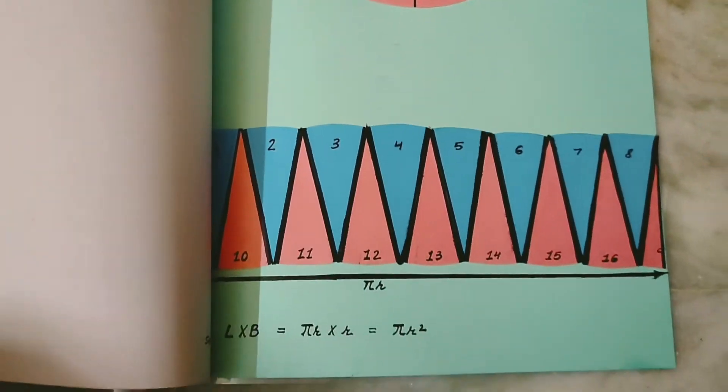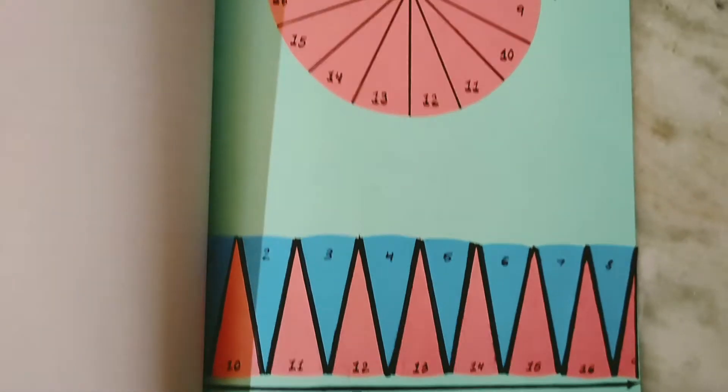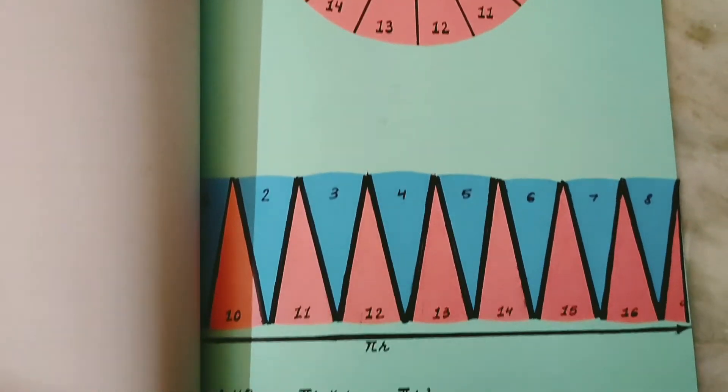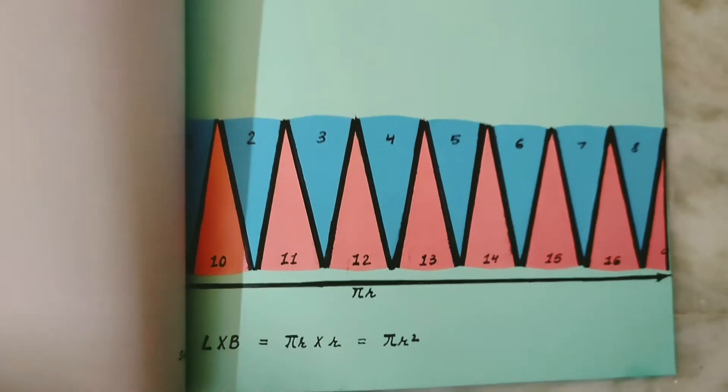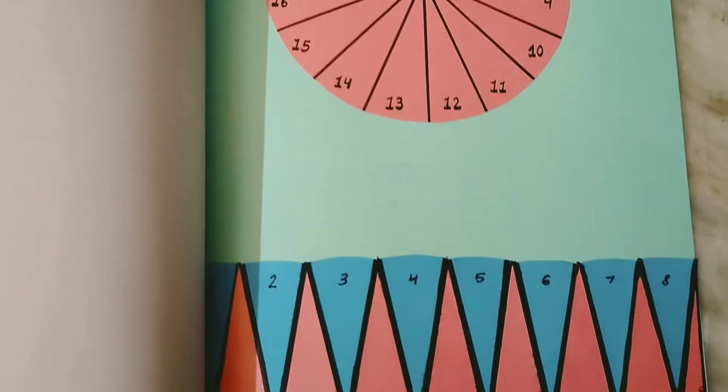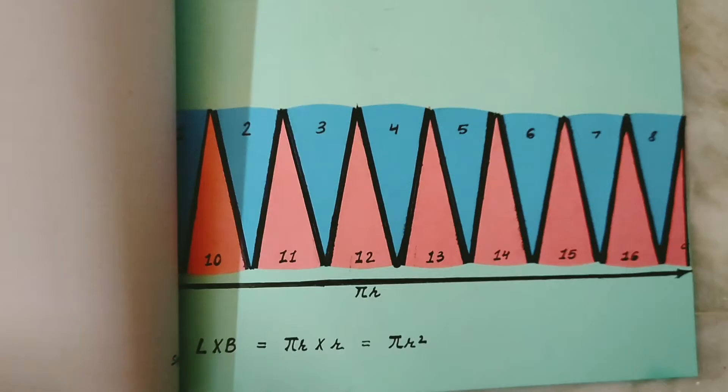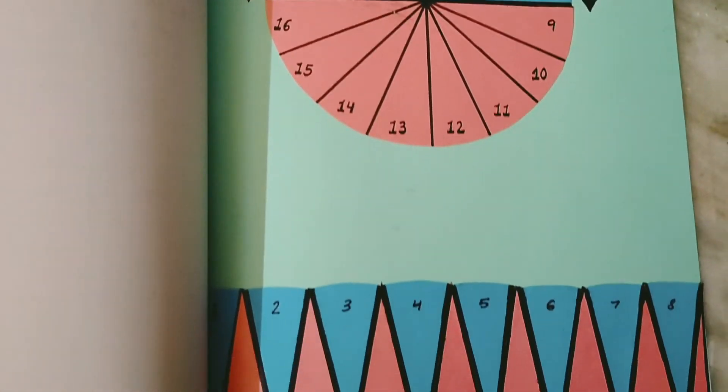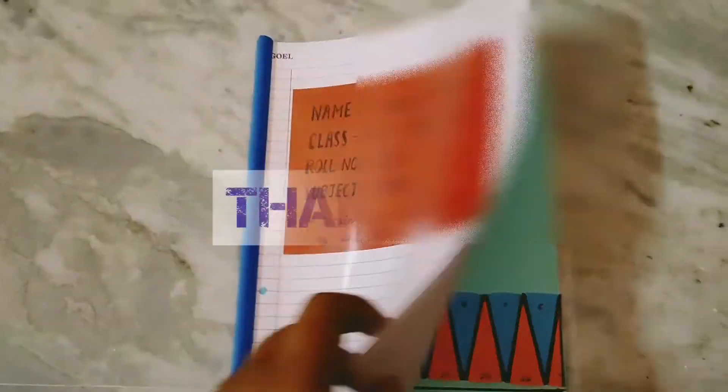As length of the rectangular shape is equal to half of the circumference which equals pi R, breadth of the rectangular shape is equal to the radius of the circle, therefore the area of rectangle is equal to L times B which is equal to pi R times R which is equal to pi R square units, which is equal to area of the circle.